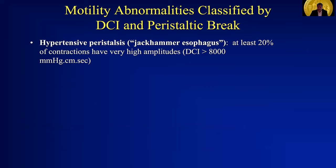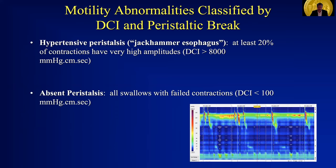The major disorders of peristalsis that we see include hypertensive peristalsis, most commonly referred to now as jackhammer esophagus, in which at least 20% of swallow sequences have a DCI of greater than 8,000. Note that we no longer in Chicago Classification version 3.0 have the entity nutcracker esophagus — that term has fallen by the wayside in favor of this higher amplitude jackhammer esophagus. Then there's absent peristalsis or absent contractility, where all of the swallows are failed — there is no swallow with a DCI greater than 100 in the entire swallow sequence.